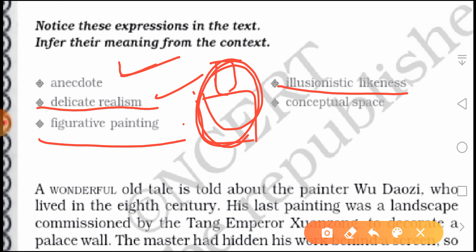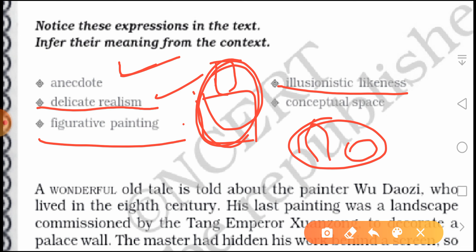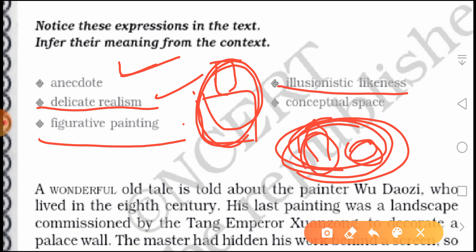Fourth is illusionistic likeness. It refers to the technique of using pictorial methods in order to deceive the eye — like a skeleton image that is only there to deceive your eyes. Such a kind of painting is called illusionistic likeness. Next is conceptual space, which refers to the relation between the abstract and the factual representation — the incalculable dimension of understanding a concept.